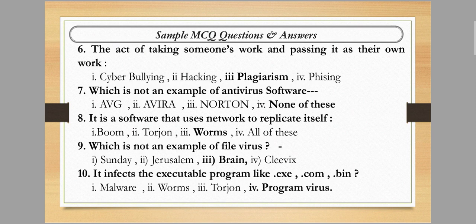Next question: which is not an example of antivirus software? Read the question carefully — it asks which is NOT an example. AVG, Avira, and Norton are all examples of antivirus software. So option number four — none of these — is the correct answer, because all the listed options are antivirus software.